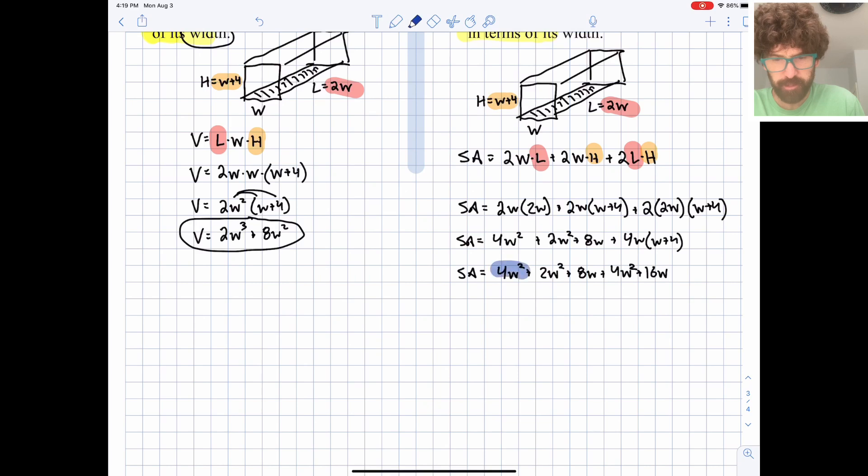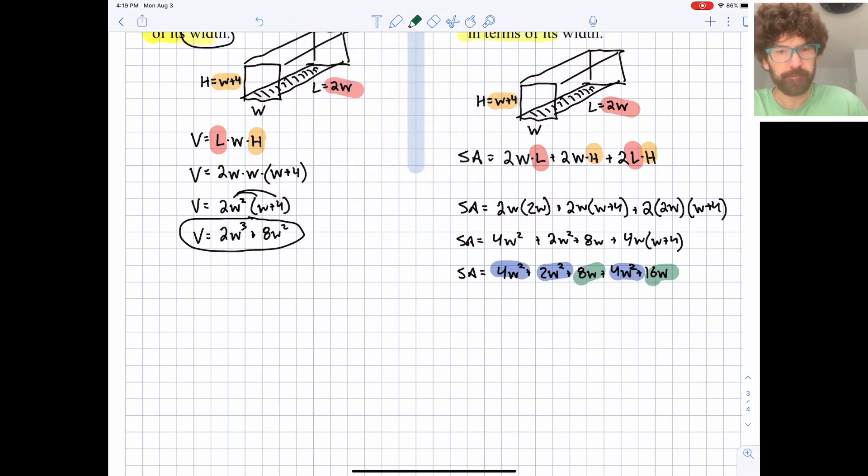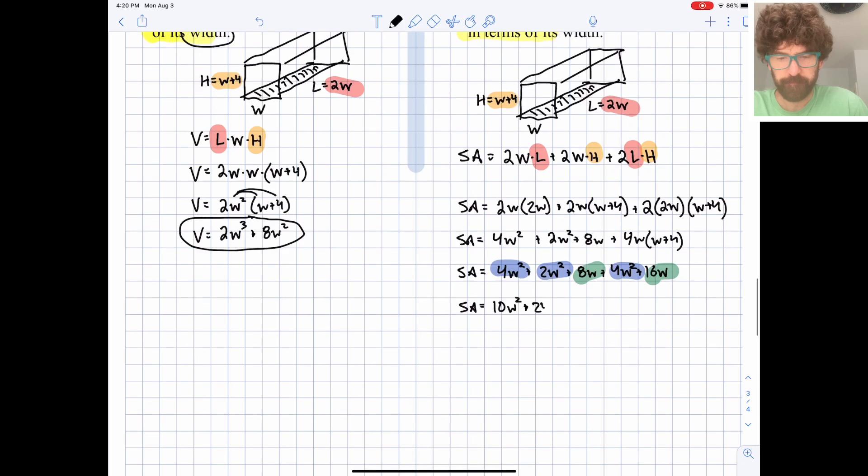We have some w squareds, and then we also have some plain old w's. So let's group those guys together. We have a total of, it looks like, 10w squareds, and 24w's. And that's going to wrap up that one. We have a final simplified equation for the surface area of a box of any width, as long as it conforms to those given guidelines. That's a good place to stop right there.